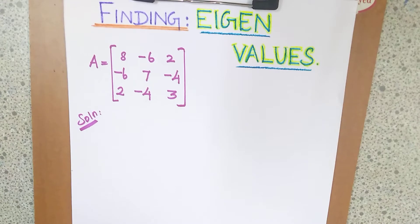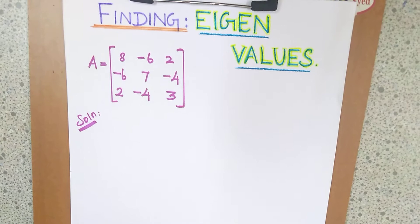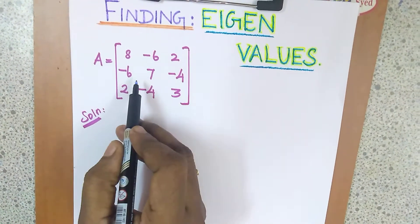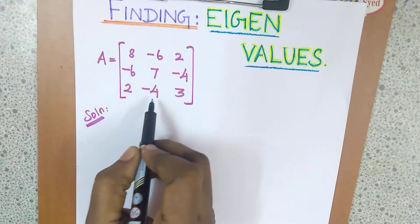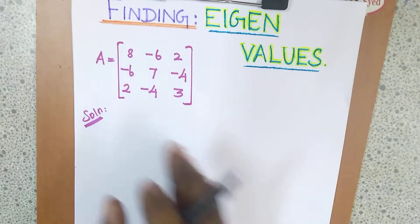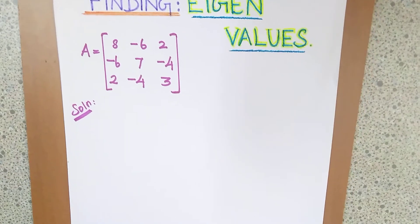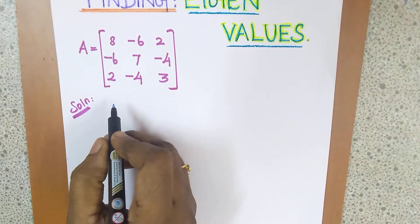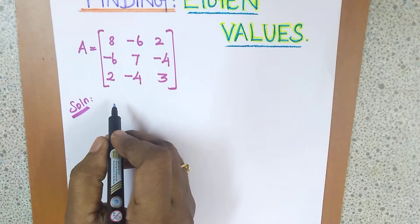Here we have taken a matrix A equal to [8, -6, 2; -6, 7, -4; 2, -4, 3]. For this matrix, first we need to find the characteristic equation. As mentioned, the video link for finding the characteristic equation is given in the description box — you can refer to that.